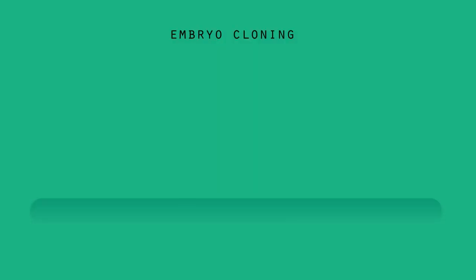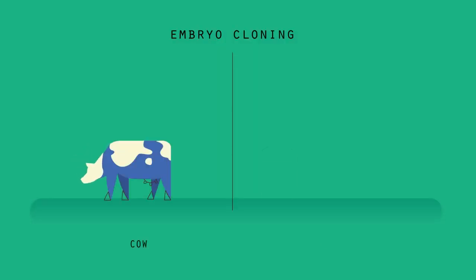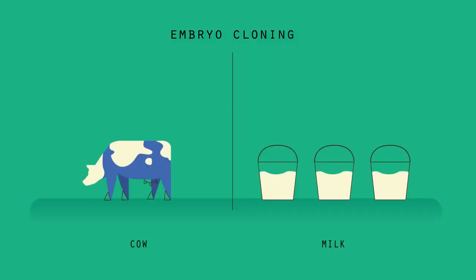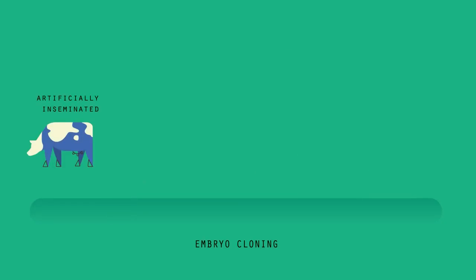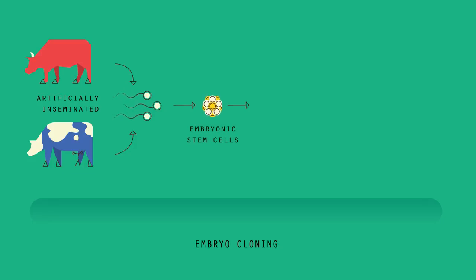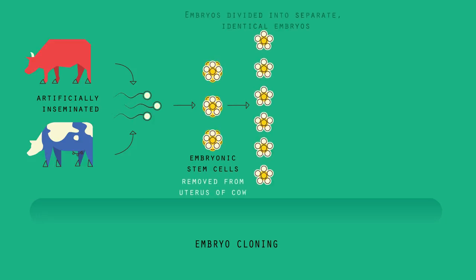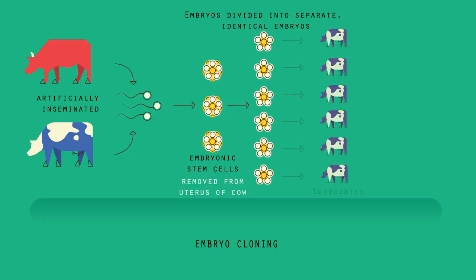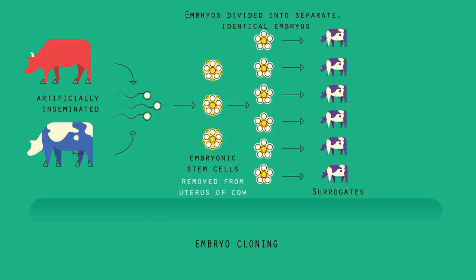The first is called embryo cloning. A farmer might have a cow that gives a lot of milk and wants to use her to create many calves. The cow is artificially inseminated using the sperm of a bull. The embryos grow until they form a ball of embryonic stem cells, before they become specialized. The embryos are then removed from the uterus, divided up into separate embryos — which will all have the same DNA — and each is placed into the womb of a different surrogate cow to grow the embryos until they are born.